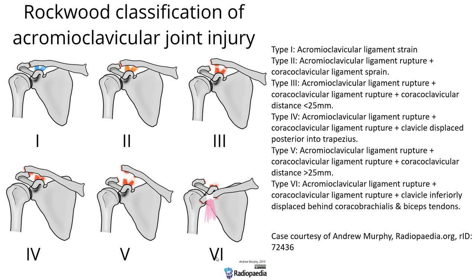The acromioclavicular joint injury classification into six types: Type 1 is an acromioclavicular ligament sprain. Type 2 is an acromioclavicular ligament rupture plus coracoclavicular ligament sprain. Type 3 is an acromioclavicular ligament rupture and coracoclavicular ligament rupture, plus coracoclavicular distance less than 25mm.